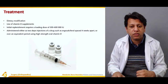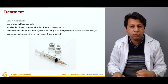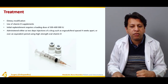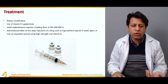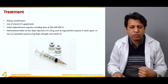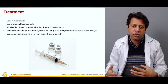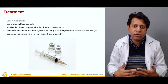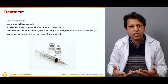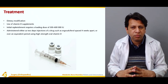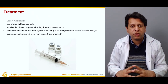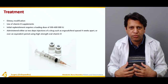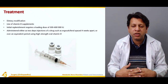Vitamin D supplements require a loading dose of 300,000 to 600,000 international units initially. This can be given as intramuscular injections, such as cholecalciferol, four weeks apart, or as high-strength oral vitamin D. Since oral absorption is not always effective, intramuscular injection is often preferred to ensure adequate absorption and normalize calcium absorption from the gut and kidneys.